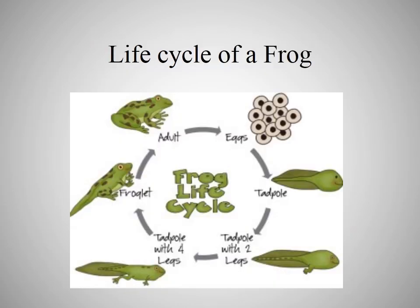Here is the life cycle of a frog. As you can see in the figure, the frog eggs are there. When the egg breaks, the tadpole comes out. The tadpole has a tail and no legs. In the third step, the tadpole grows two legs. Slowly, as they grow older, they come up with four legs and their tail vanishes. Then they become an adult — a fully grown frog with no tail.